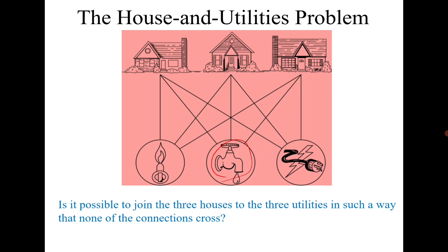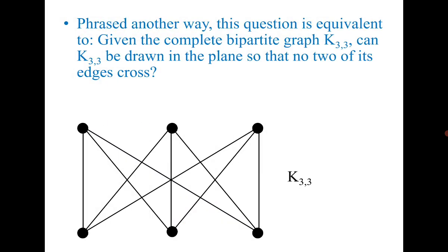The question is: is it possible to make connections such that none of them cross? If you represent houses and utilities by vertices, the problem transforms as follows: can you draw the graph K3,3 in the plane such that no two edges cross each other? Please try it yourself, and we will discuss the answer at the end of this class.